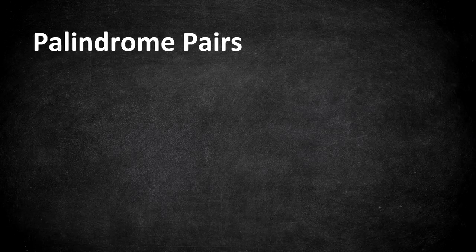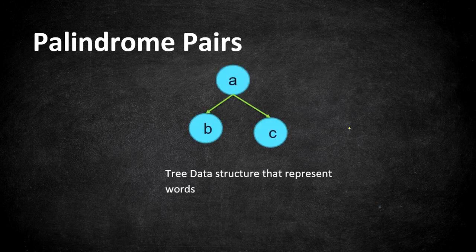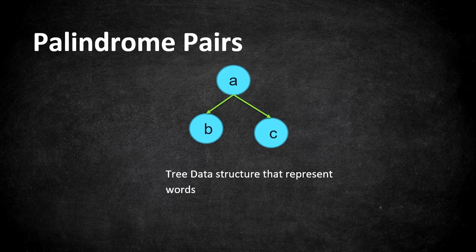If we think of a data structure that helps us search for words with common prefixes, that is a Trie. We are going to implement this solution using a Trie. A Trie is a tree data structure that represents words in tree format where nodes hold alphabet values. It typically has an insert function and a search function.